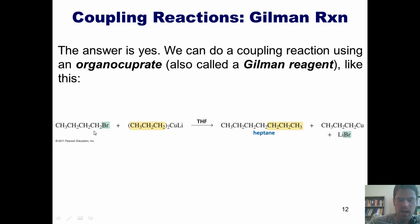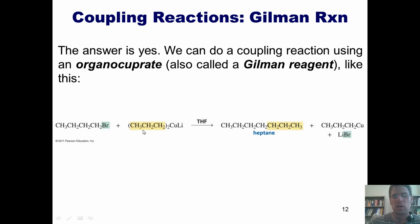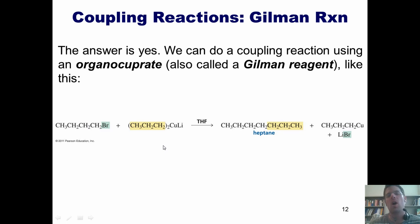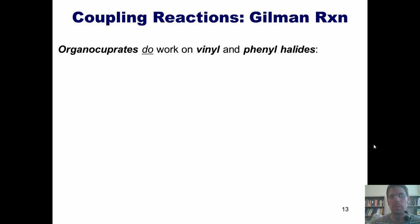I want you to look at this closely. I've got an alkyl halide — this bromine is stuck to an sp3 hybridized carbon, but this type of reaction can also work with an sp2 hybridized carbon. I react it with a Gilman reagent: copper stuck to lithium, stuck to two hydrocarbon chains that must be the same as each other. One of those chains ends up taking the place of the halogen to give the final product. This reagent is called an organocuprate or Gilman reagent, and this is a coupling reaction. Organocuprates do work on vinyl and phenyl halides.